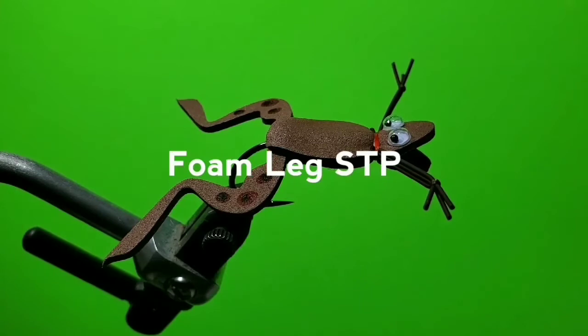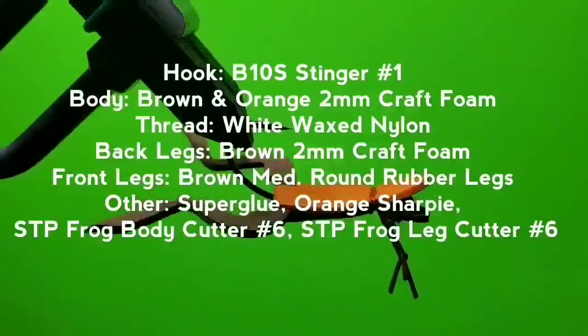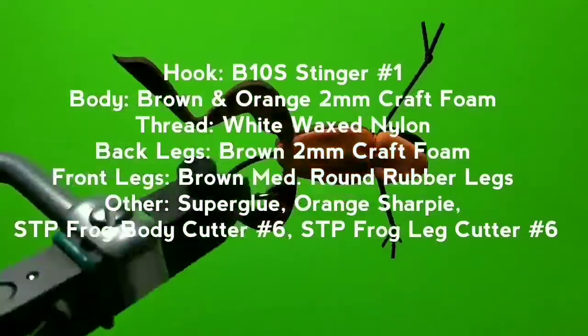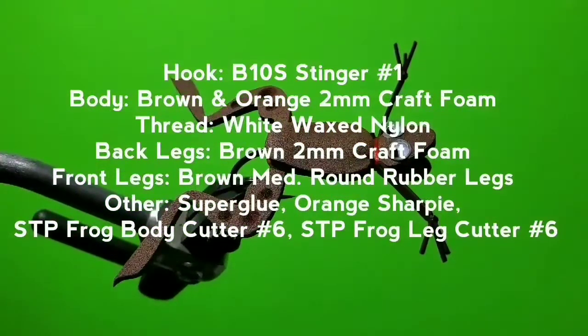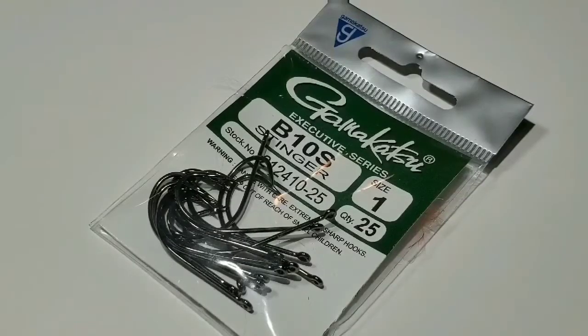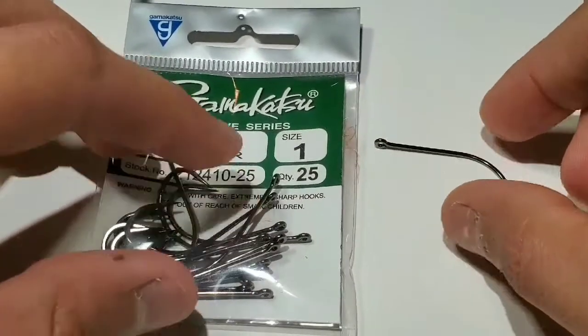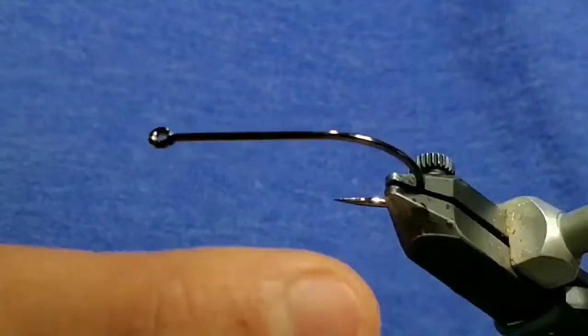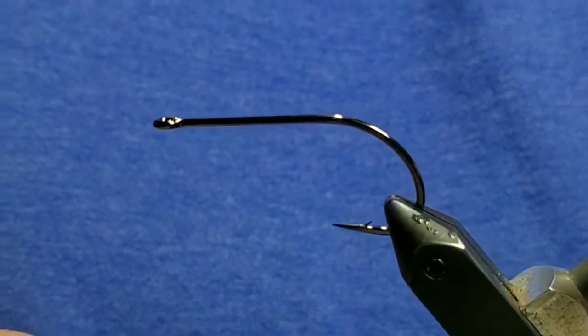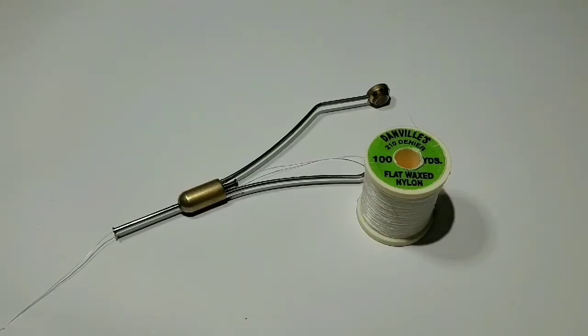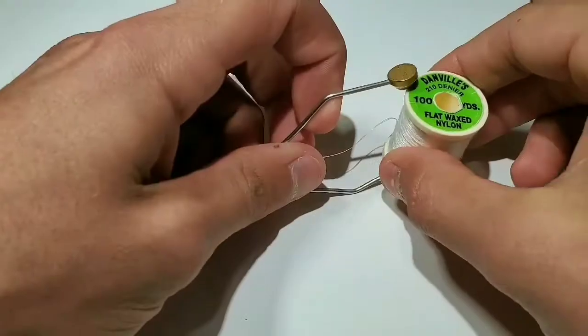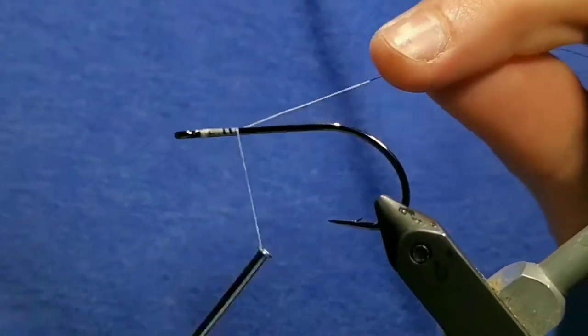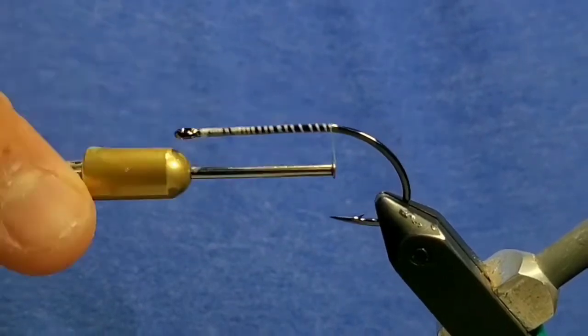The foam leg STP frog. Go to a size 1 B10S Gamakatsu stinger hook and place it firmly in the jaws of your vise. Now load a bobbin with Danville's 210 denier flat wax nylon. Start the thread behind the eye of the hook before cutting the tag end off. Make a thread base between the barb of the hook and the eye.